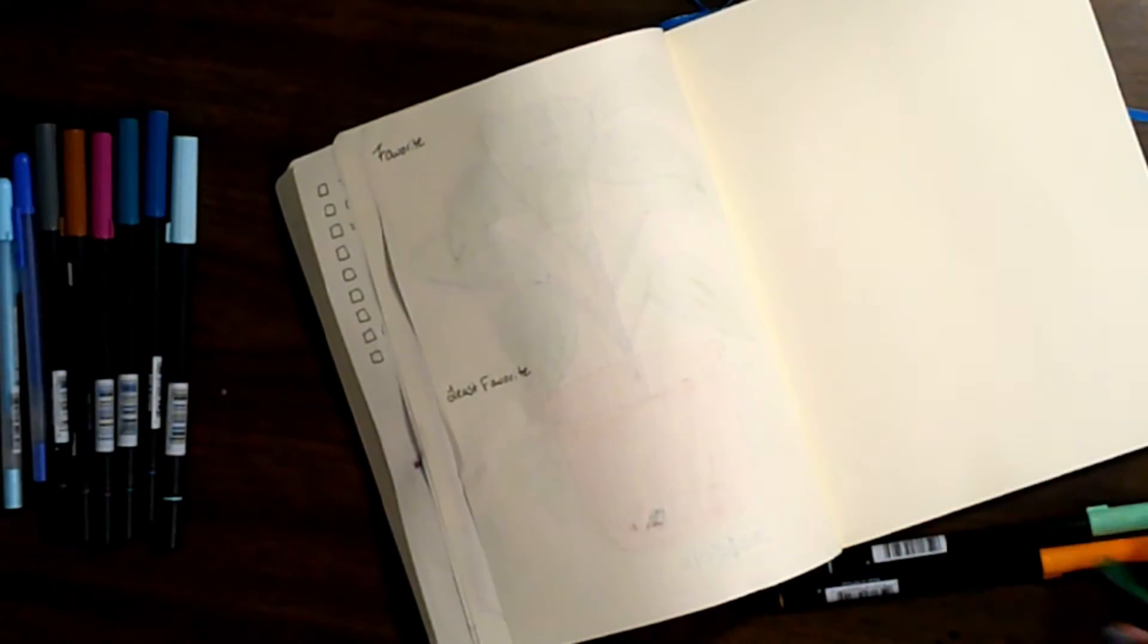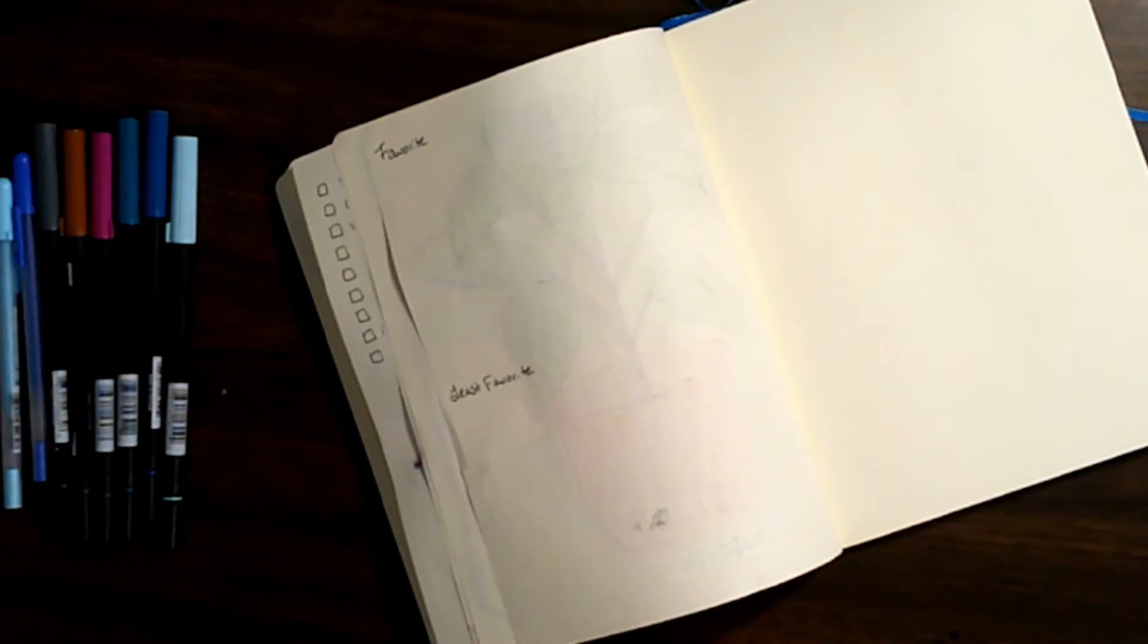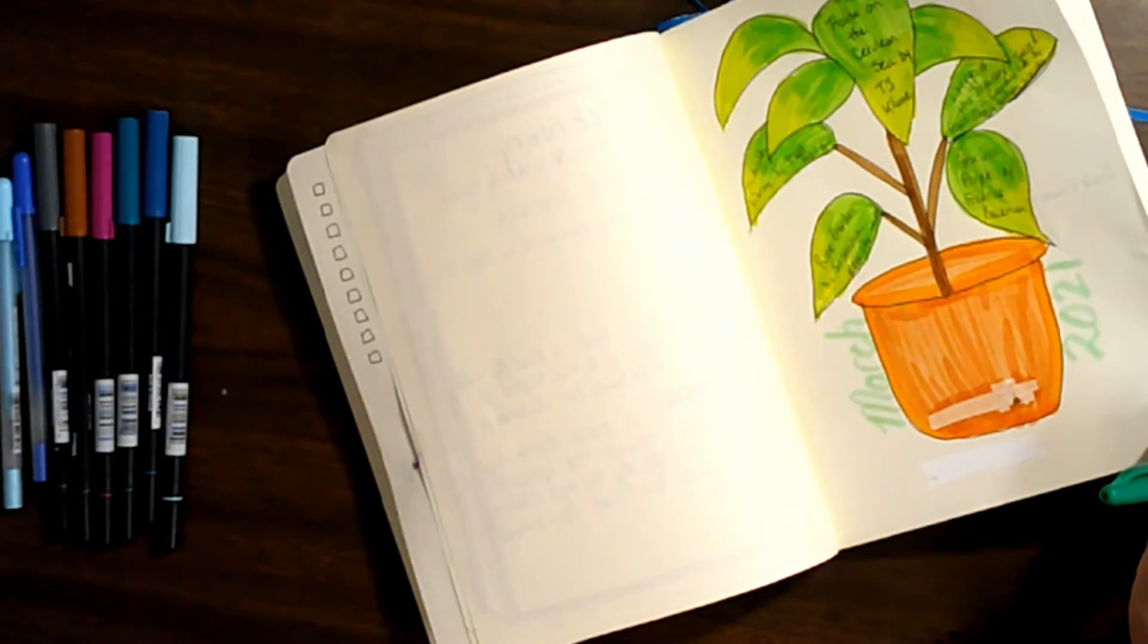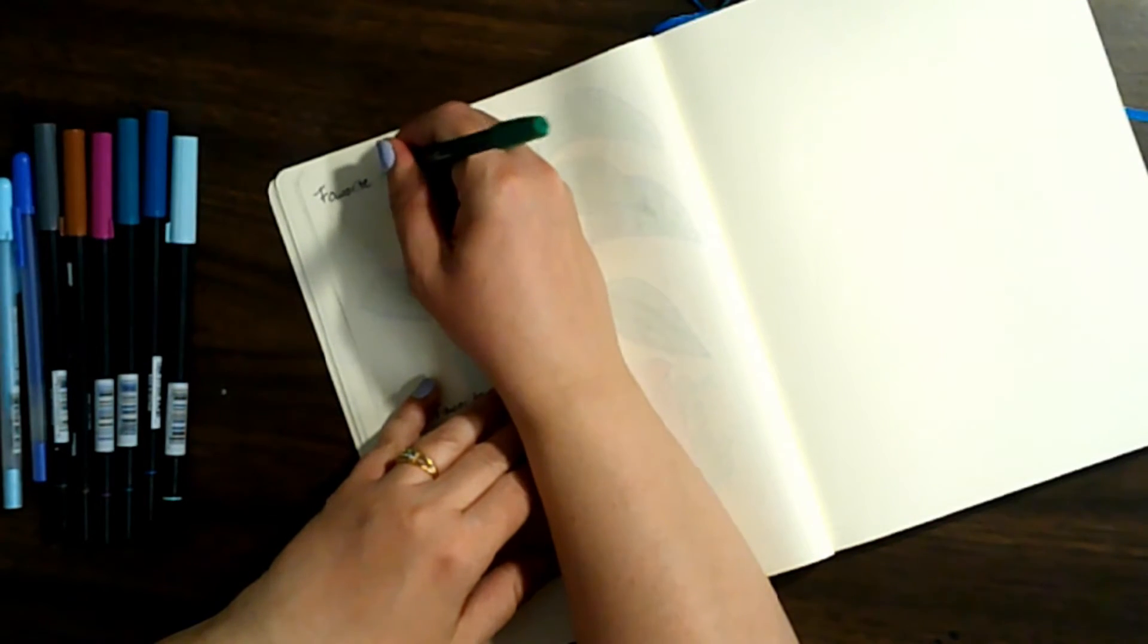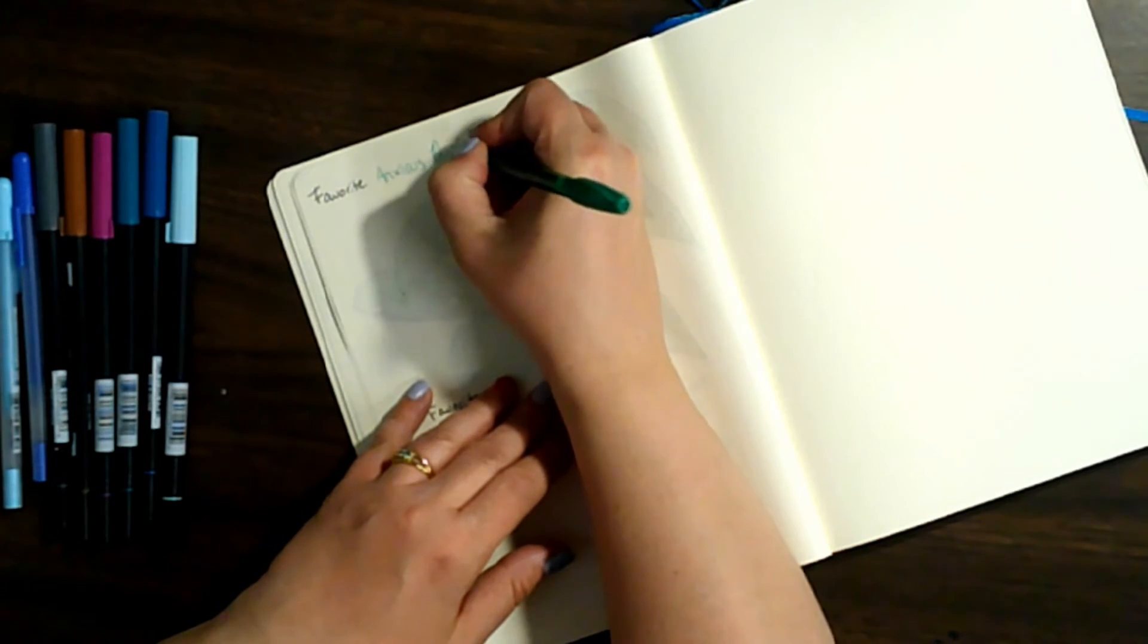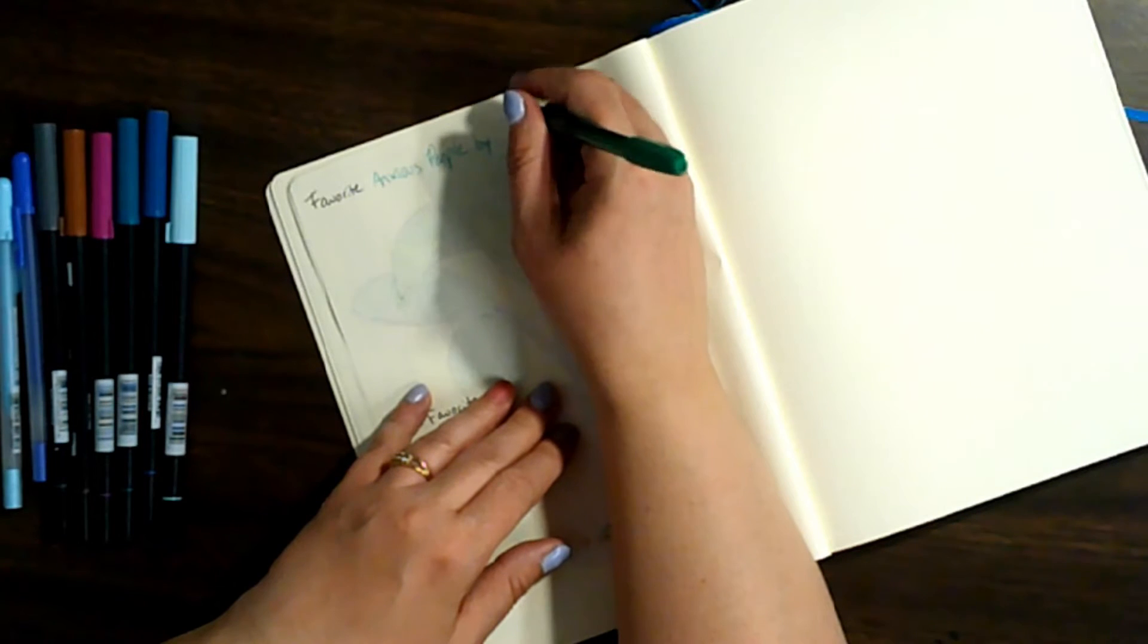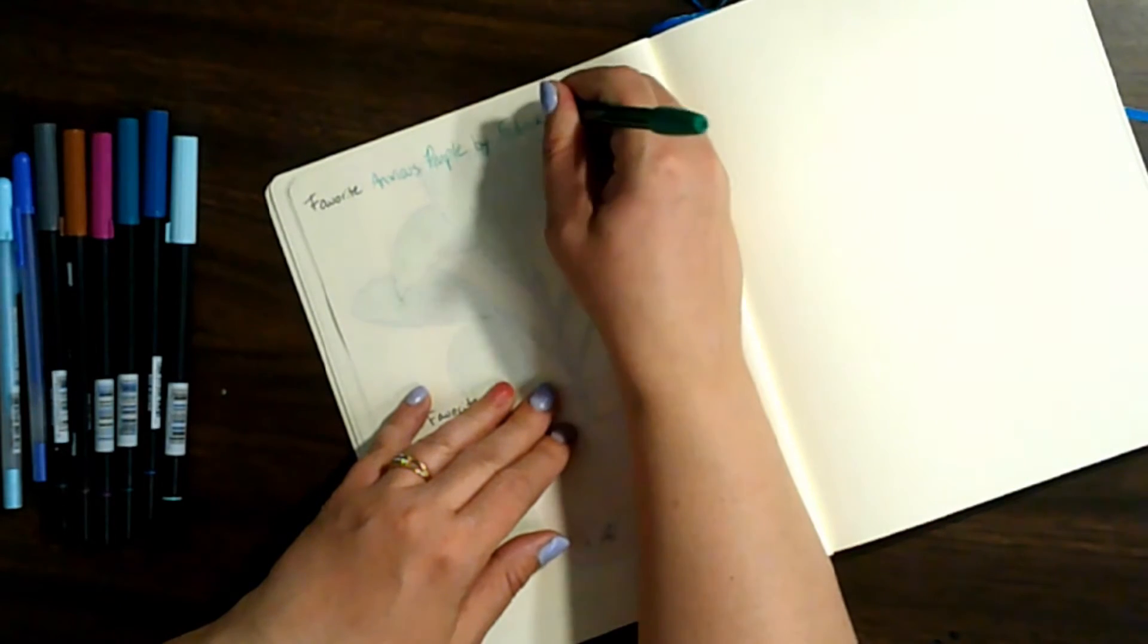So I think my favorite book this month was probably... It's a hard one. I think I'm going to say Anxious People. I really liked that one. Although the House on the Cerulean Sea was probably a close second. I actually recommended that one to a lot of people. But Anxious People was just really good on so many levels, as are pretty much all of Frederick Backman's books.